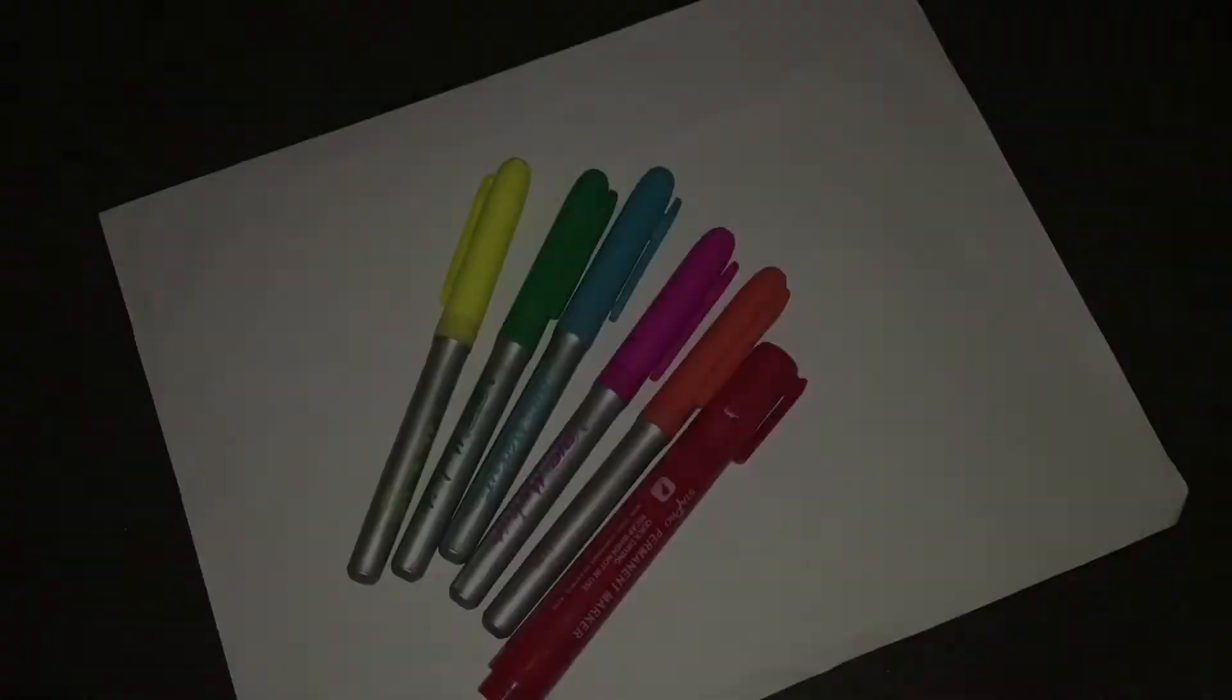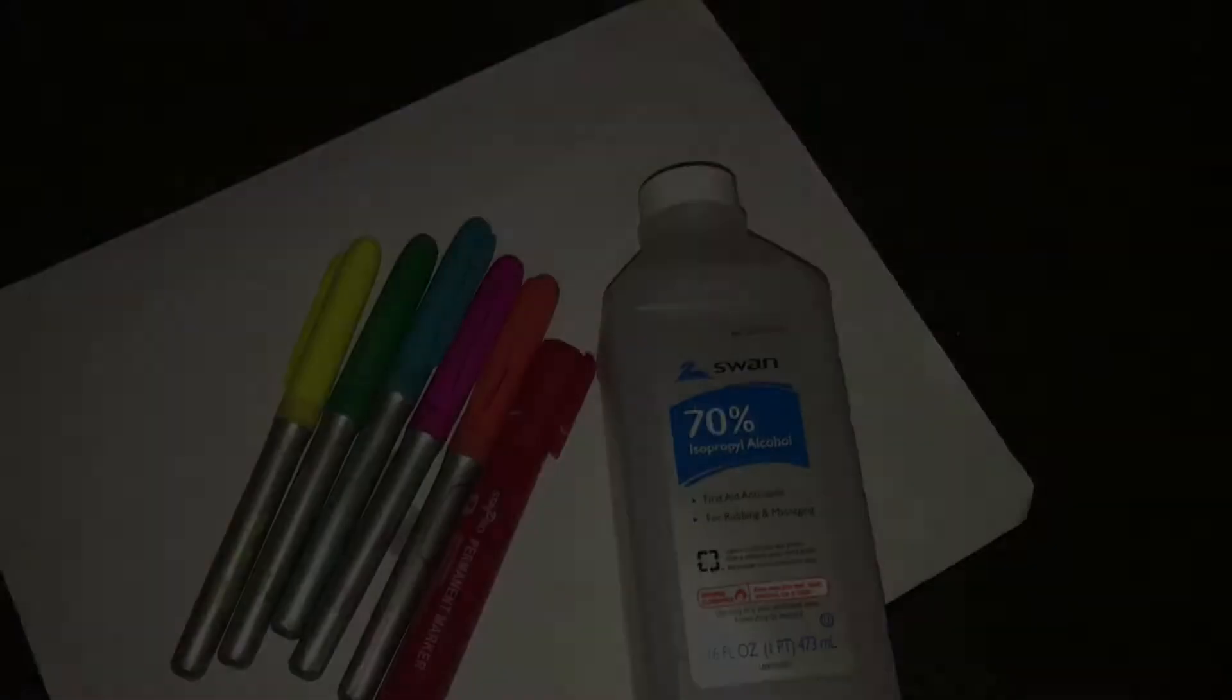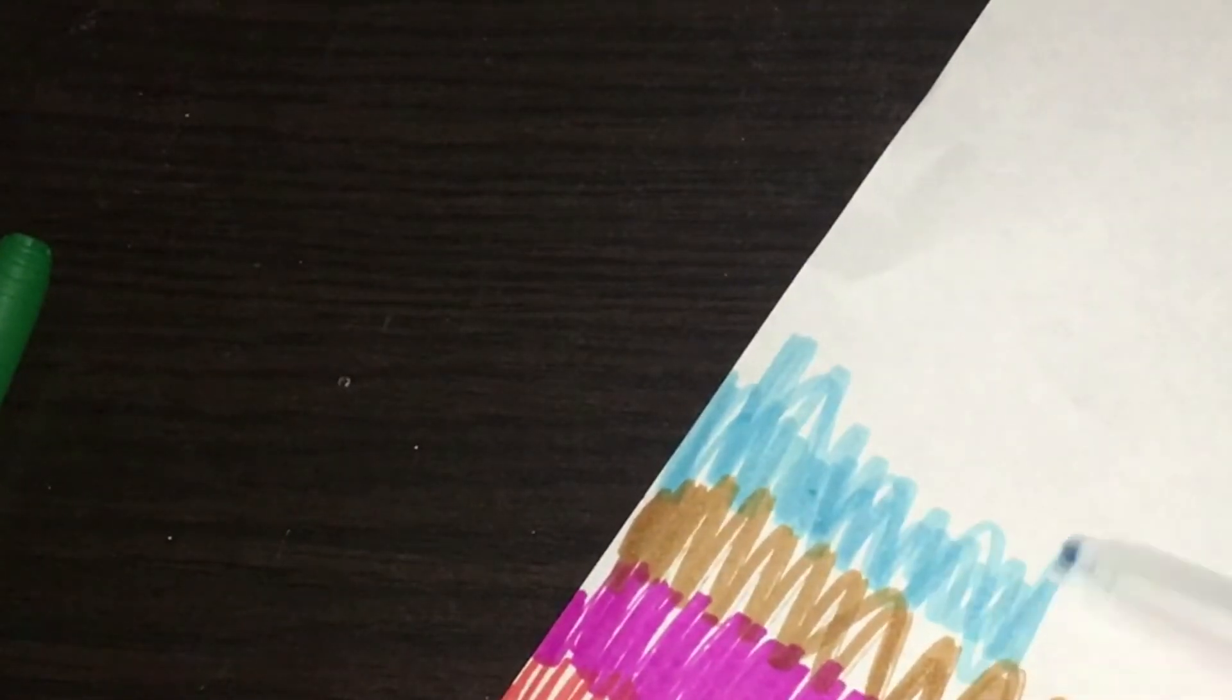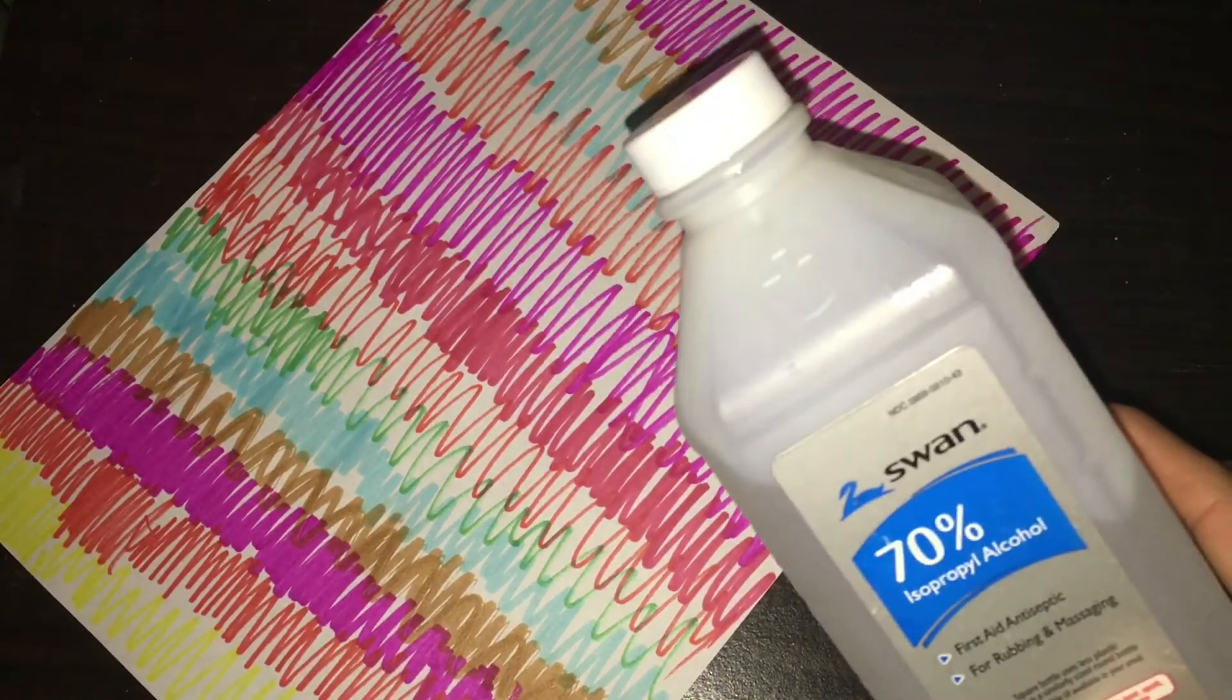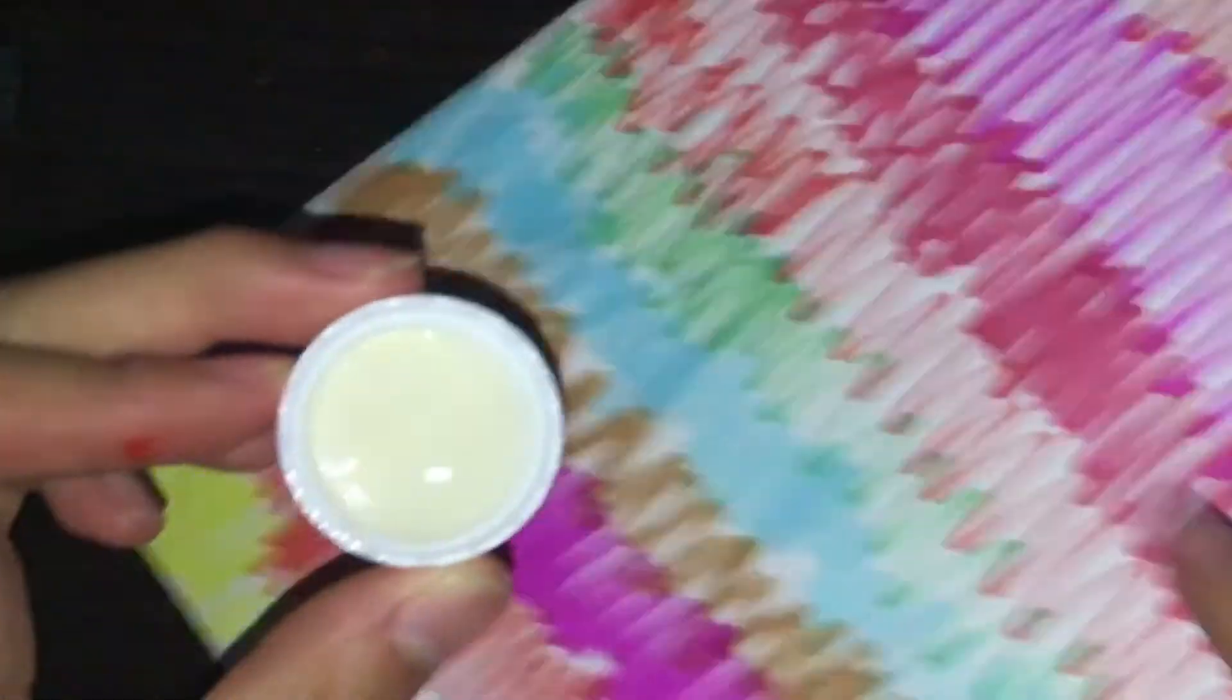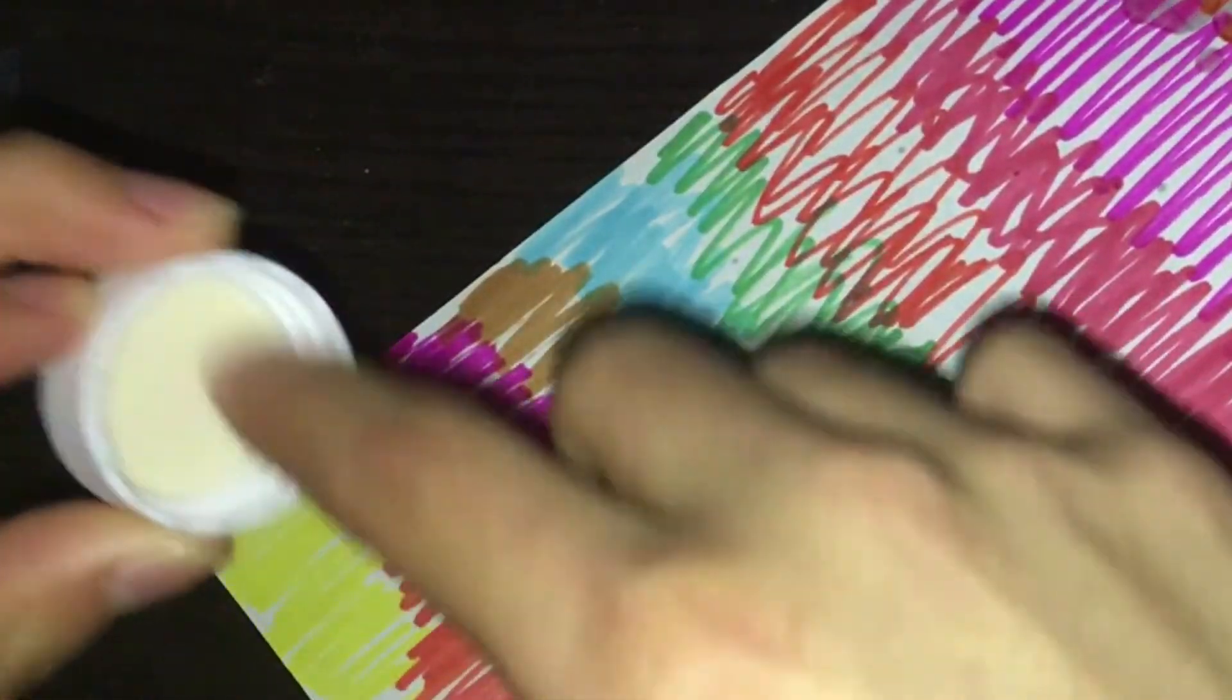For the fourth thing, you will need any kind of paper, some permanent markers, and some rubbing alcohol. First, get your paper and start coloring with your permanent markers, a variety of colors. I chose colors that will be really cute, like a watercolor. From that on, you need to get your rubbing alcohol and just pour that onto the paper until you get a watercolor effect.